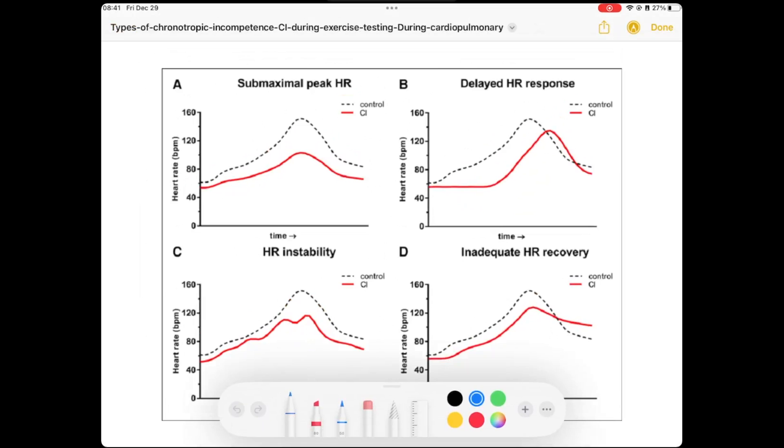This first chart is a form of chronotropic incompetence at a submaximal peak heart rate. We start exercising right here in time. As the normal graph, the dotted line, increases the way it should to this peak, in this case our heart rate is only able to get to say 80 or 40 or 50 percent, whatever percentage of that peak heart rate. The sinus node is unable to be fast enough.